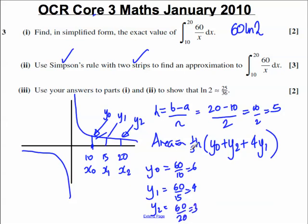Now we can use this formula. We know h, we know y0, y2, and y1. I'm just going to do this in a different pen to make it easy to follow. The area is approximately, therefore, equal to a third h. So that's a third multiplied by 5 multiplied by y0 is 6 plus y2 is 3 plus 4 times y1, which is 4.